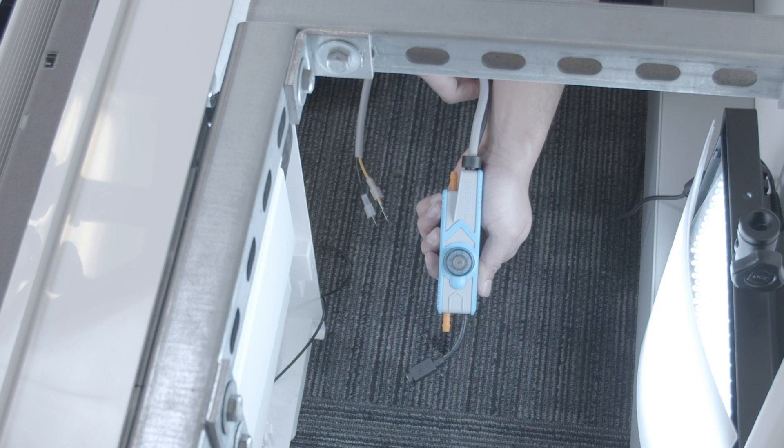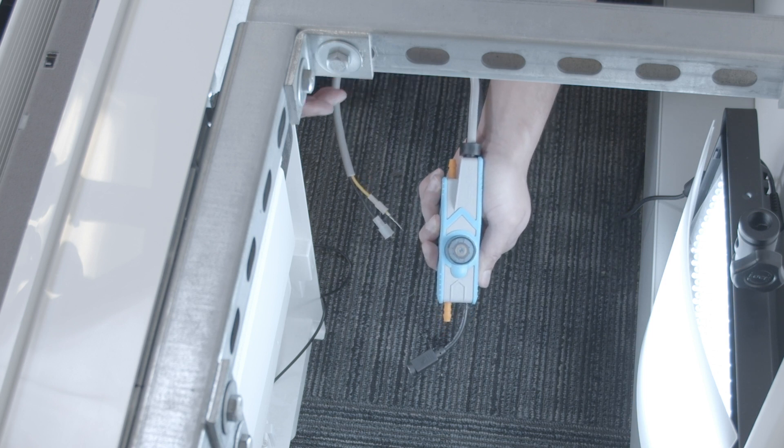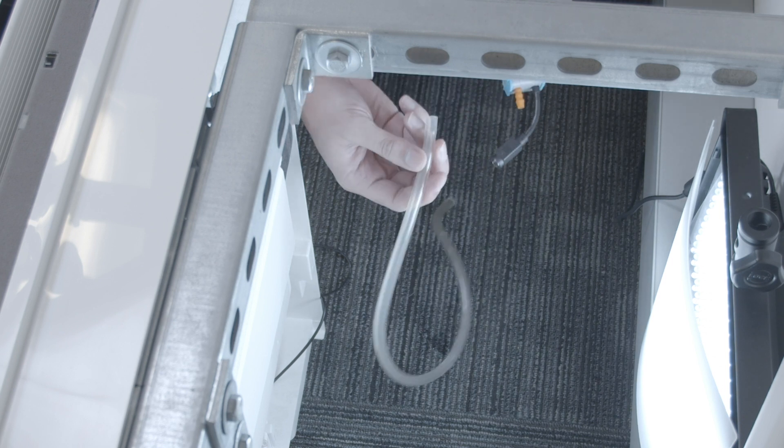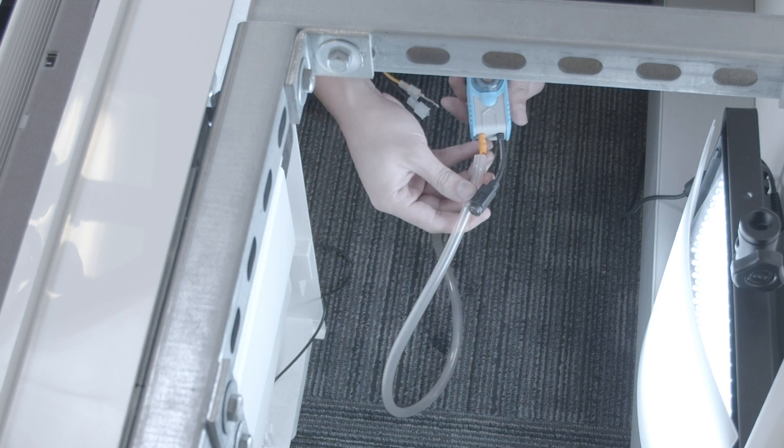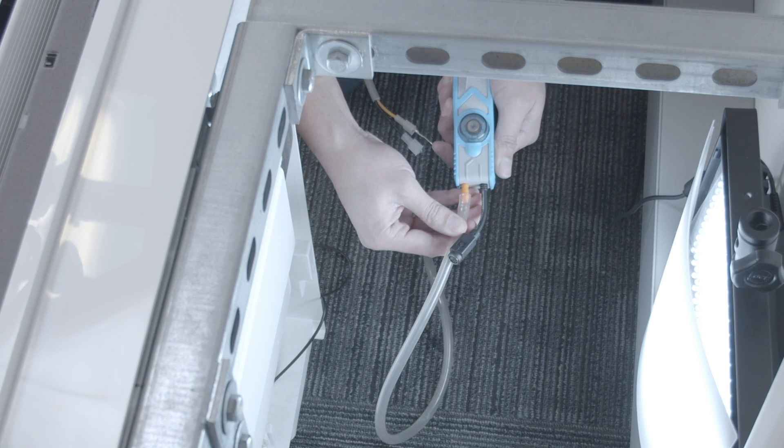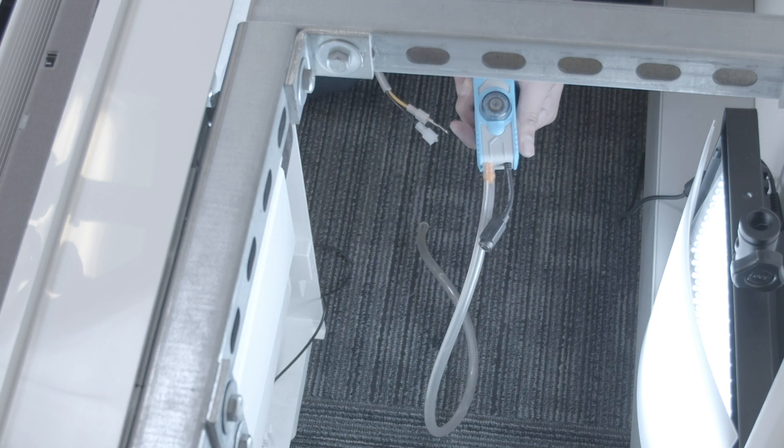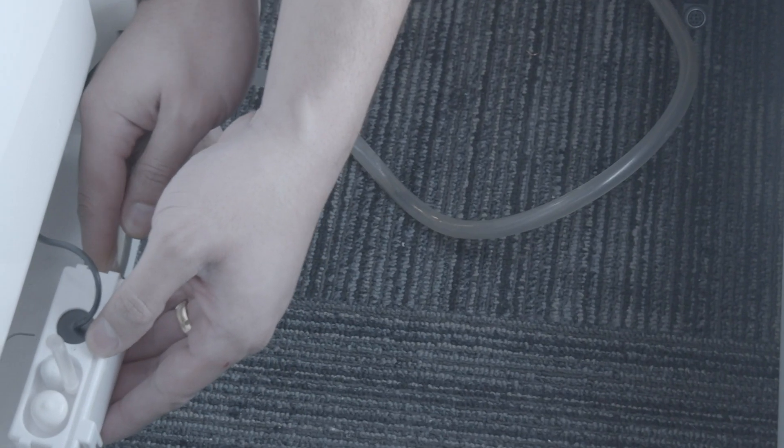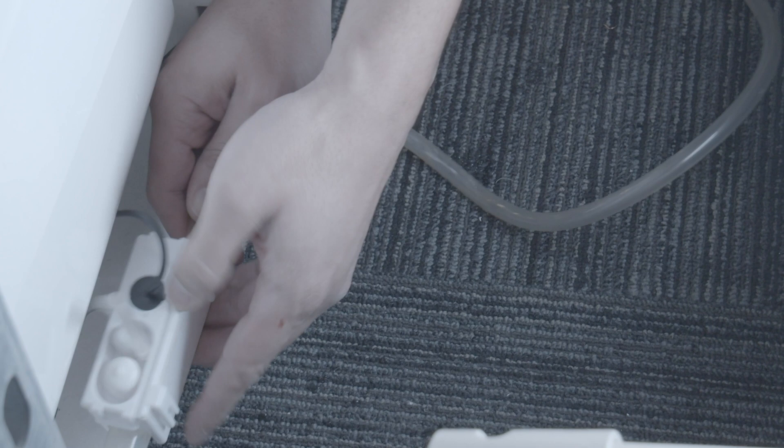Next, let's review the connections between the reservoir and the pump. Connect the field supplied condensate tubing to the inlet port of the condensate pump. Run the condensate tubing to the reservoir and connect to the outlet port of the reservoir.